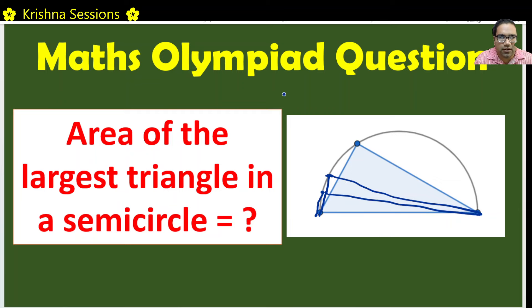We know the area of a triangle is half into base into height. In all these cases, the base is same. When we reduce the height, the area reduces. If you move the triangle very close to this point, then the area will become almost zero.